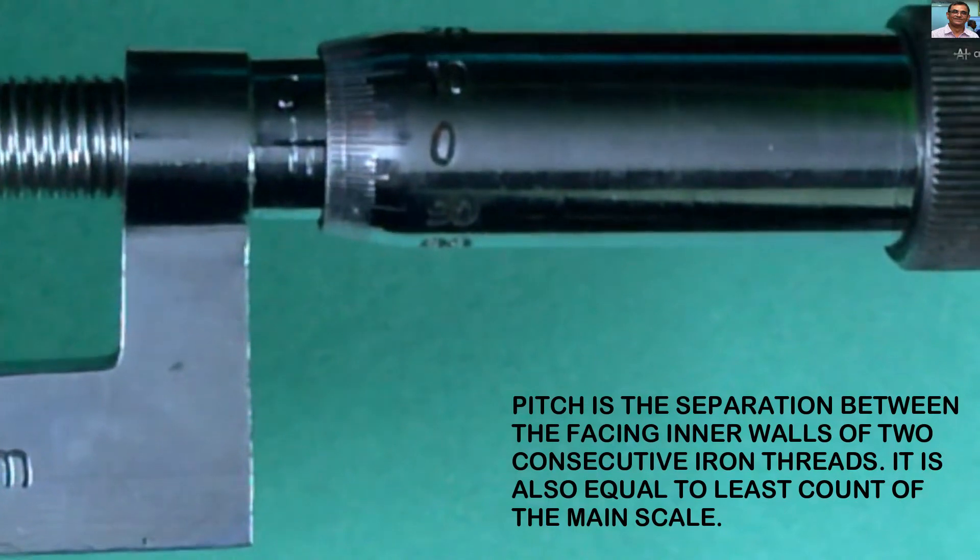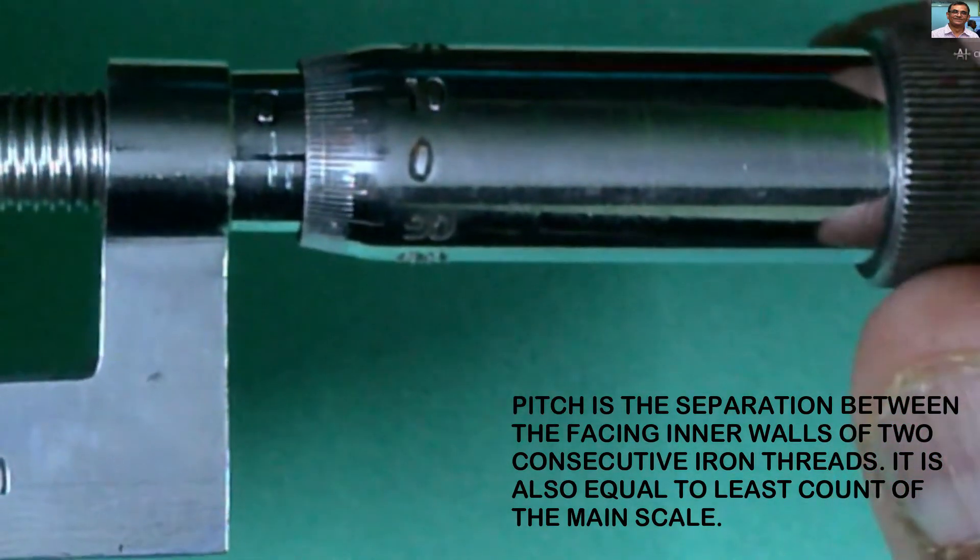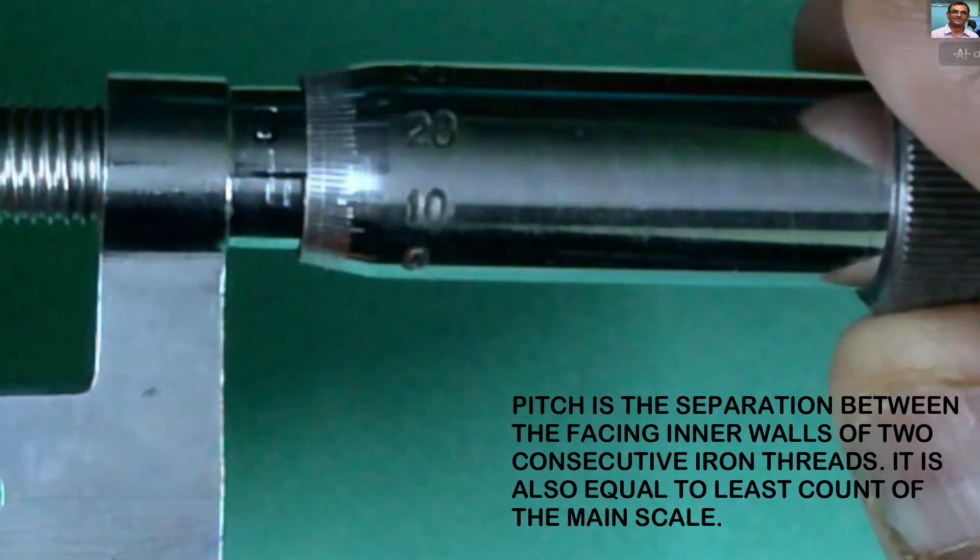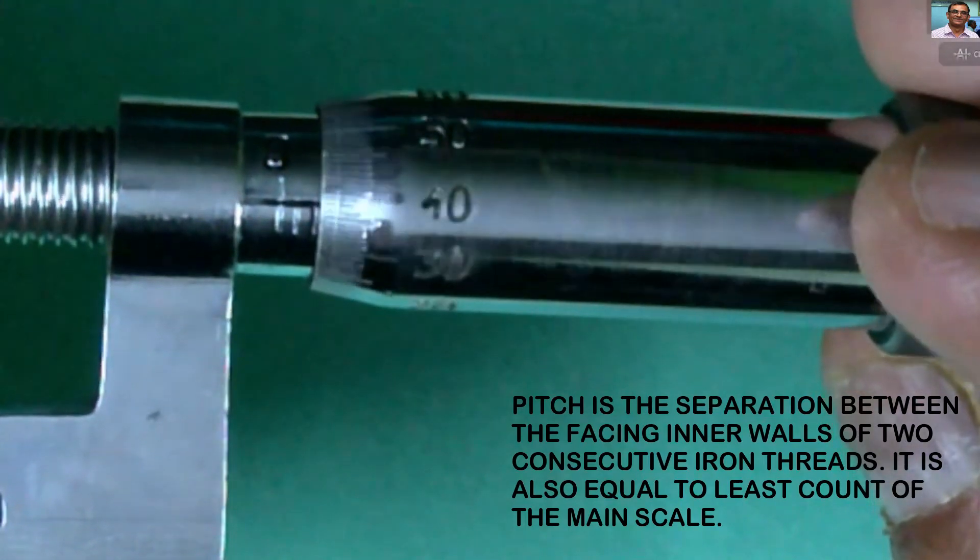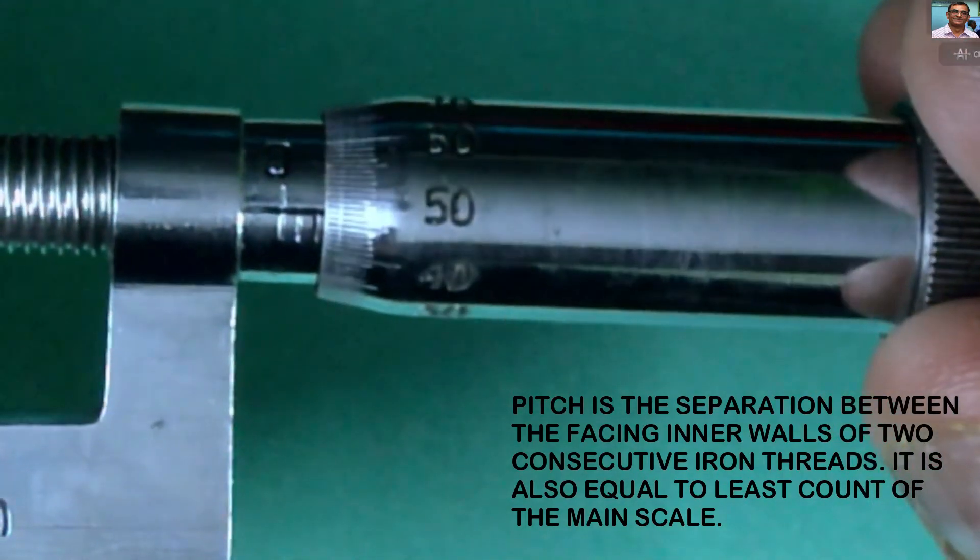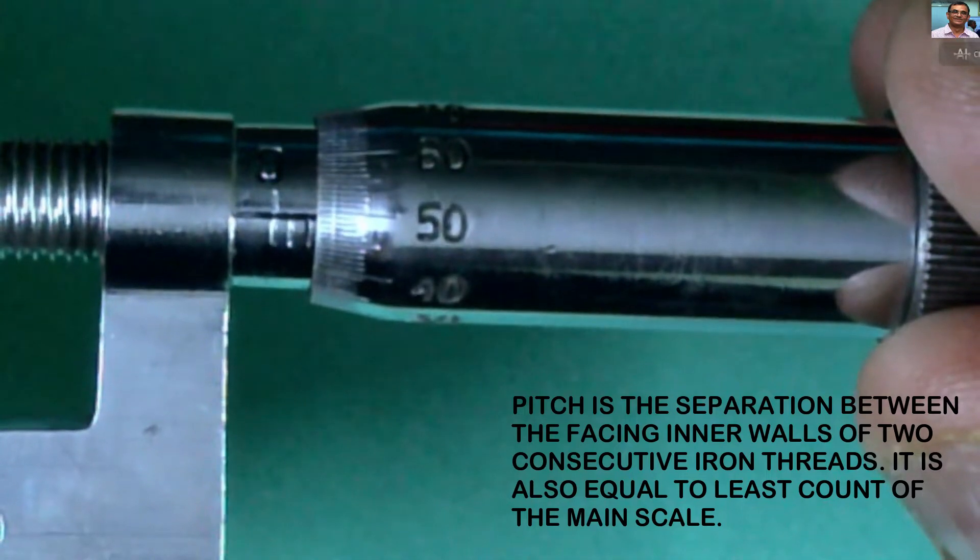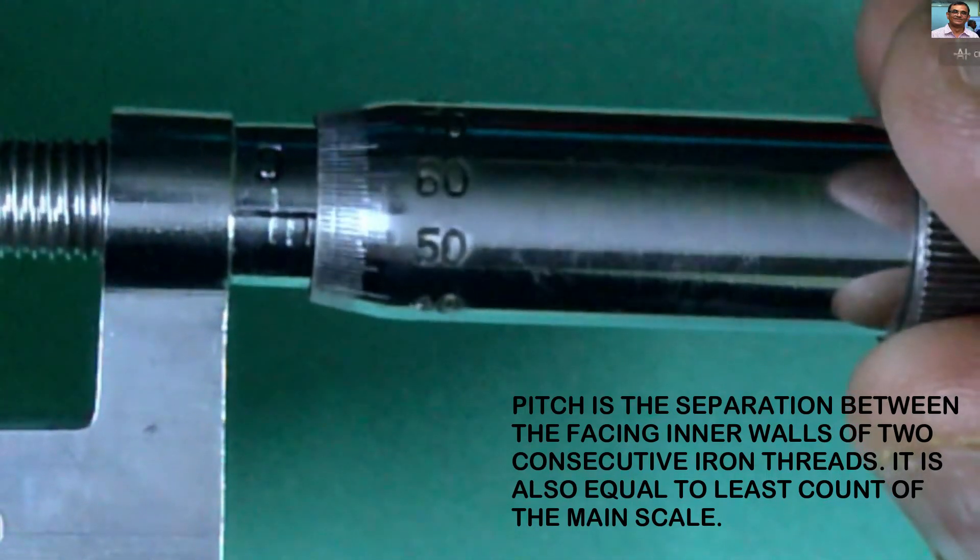Now what you do is hold the ratchet and rotate it anticlockwise. Now as you rotate it anticlockwise, what happens? The second division of the main scale appears.